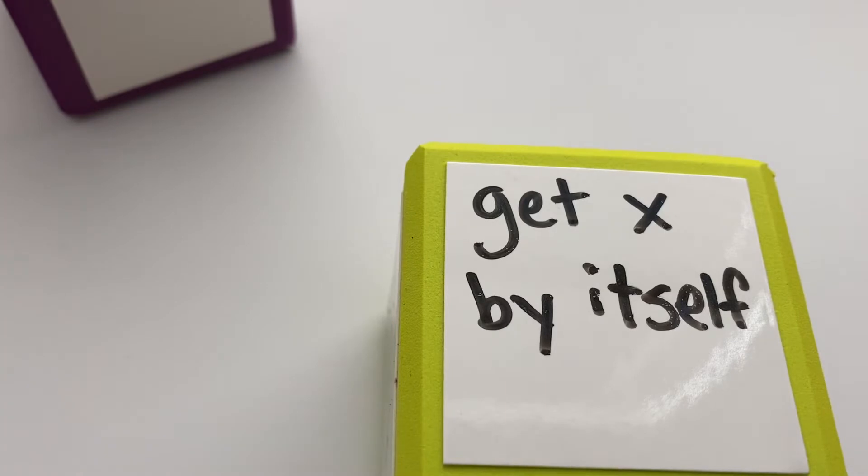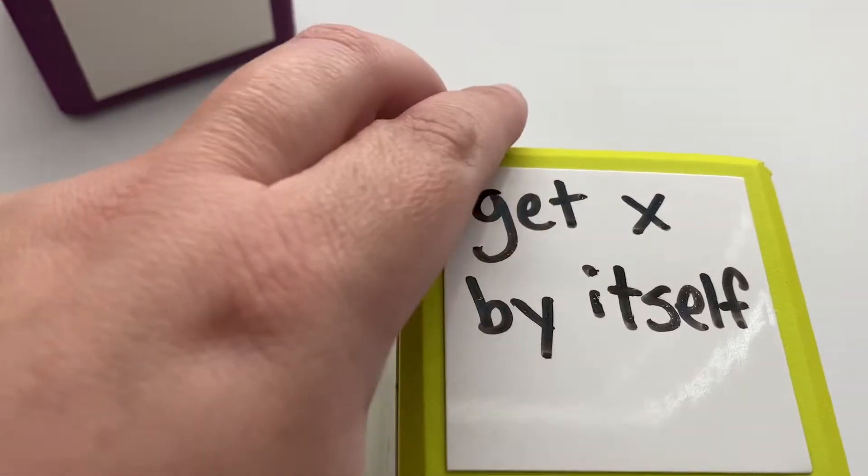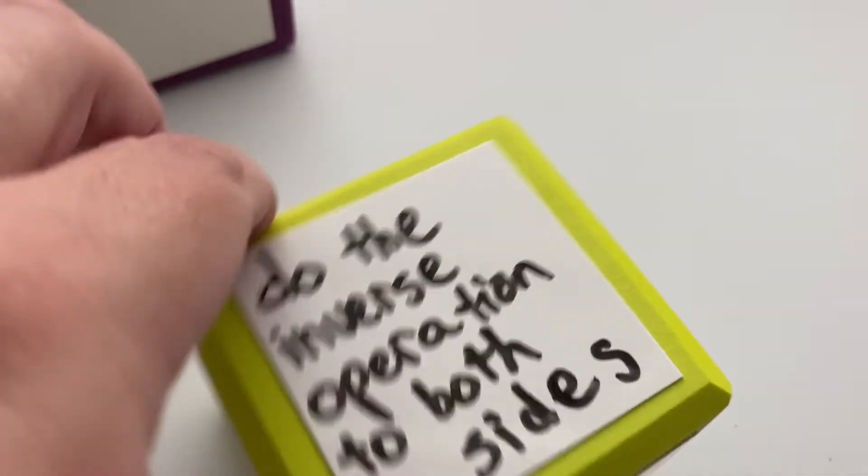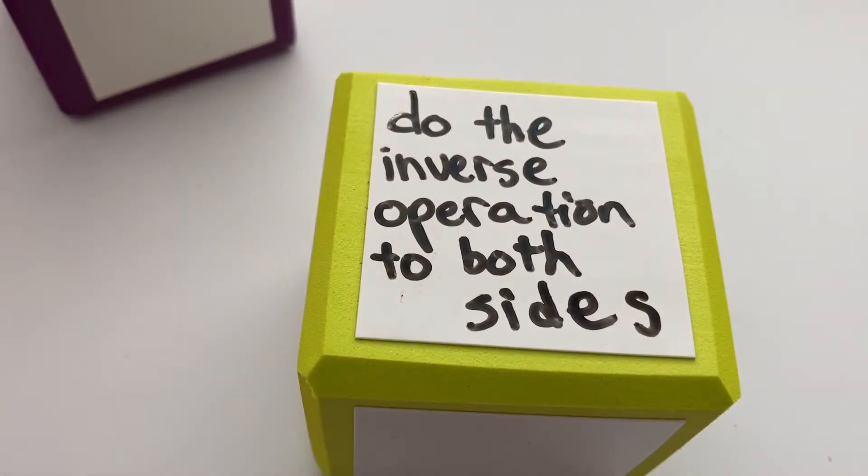And we are trying to get the x by itself. That's how we figure out what the value of x is. And we get x by itself by doing basically like a little puzzle—little maneuvers. So you do the inverse operation to both sides.